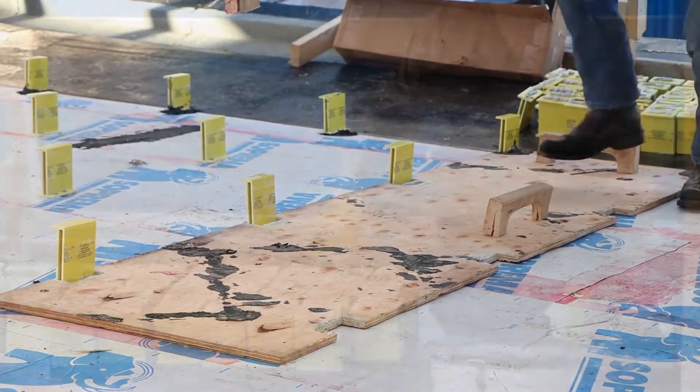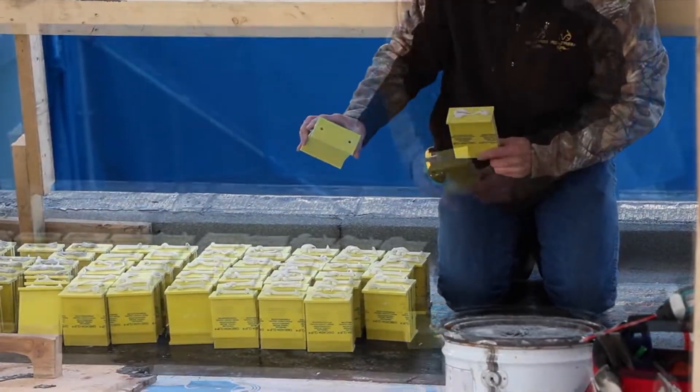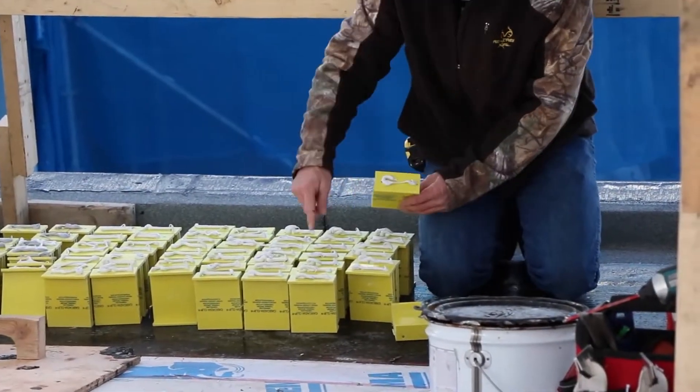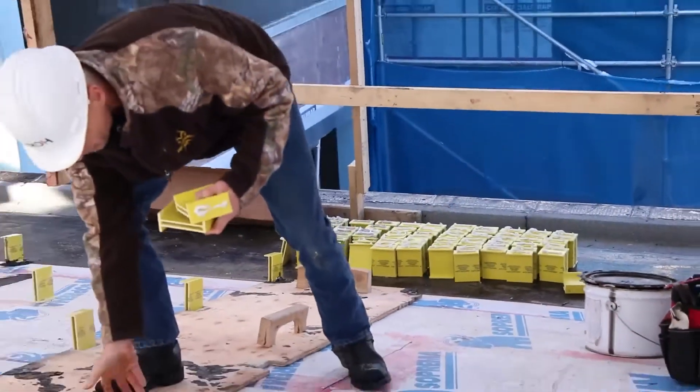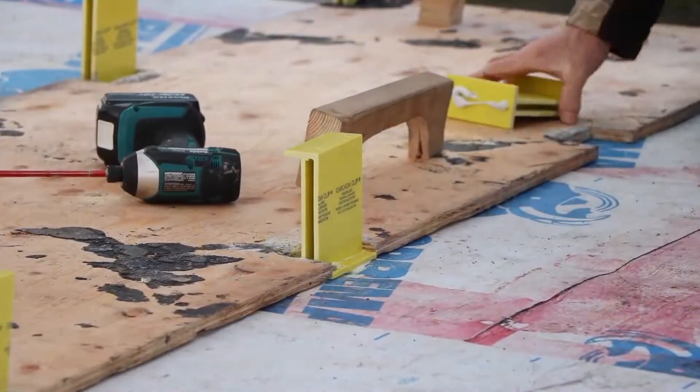Before you start placing the Cascadia clips, you want to use a sealant on the bottom of the clips to cover the holes. This will ensure a tight waterproof seal when we attach the clips to the roof deck. Press the clips onto the roof using the jig as your guide, making sure that the sealant comes up through the holes on the bottom.